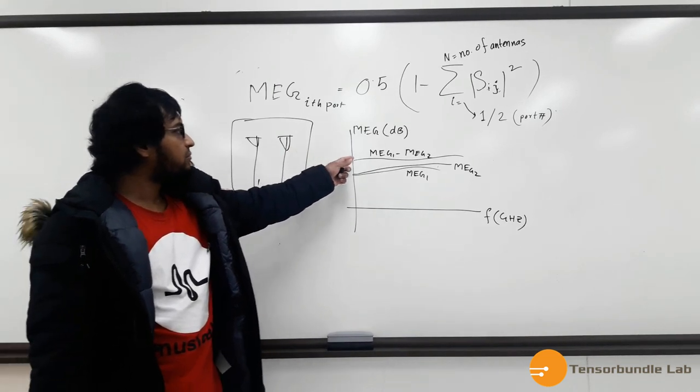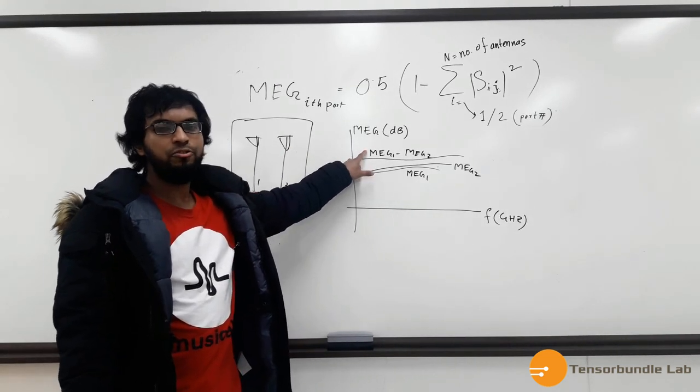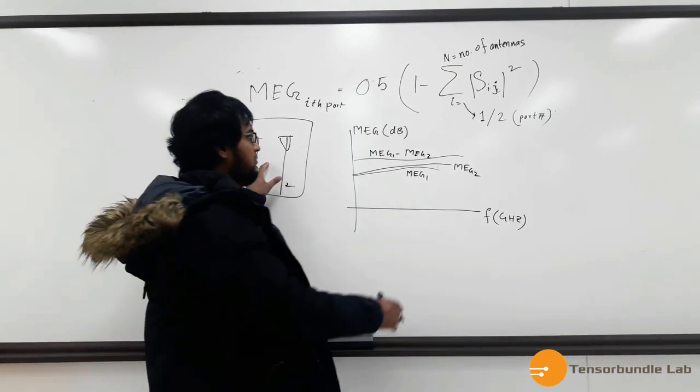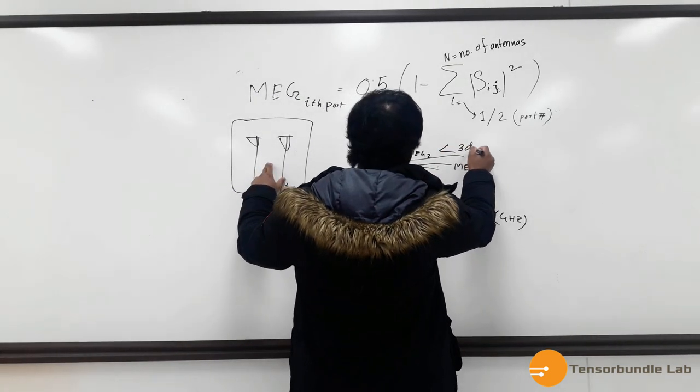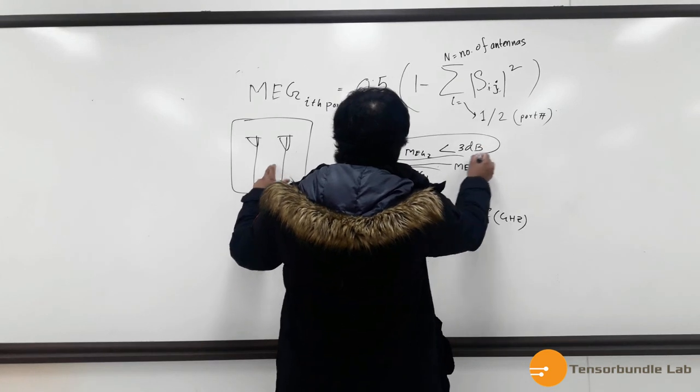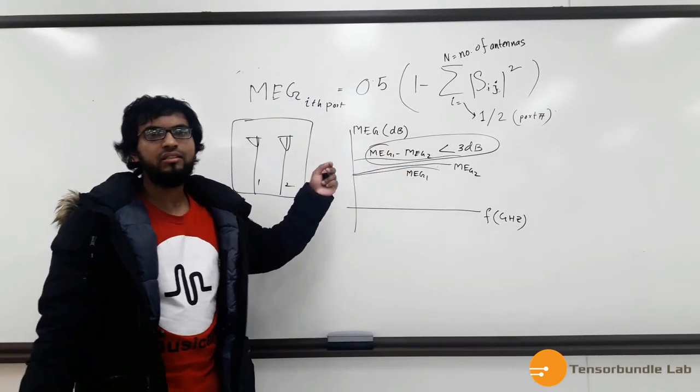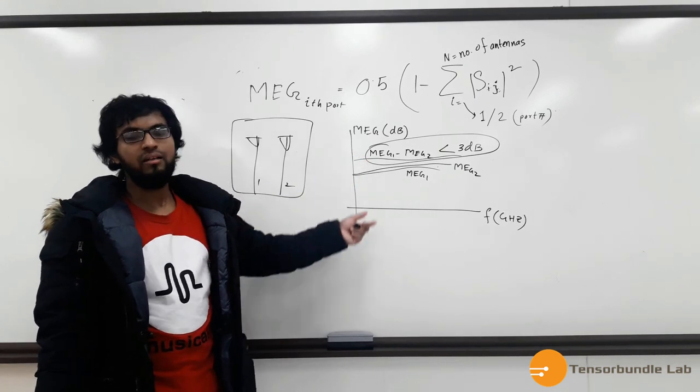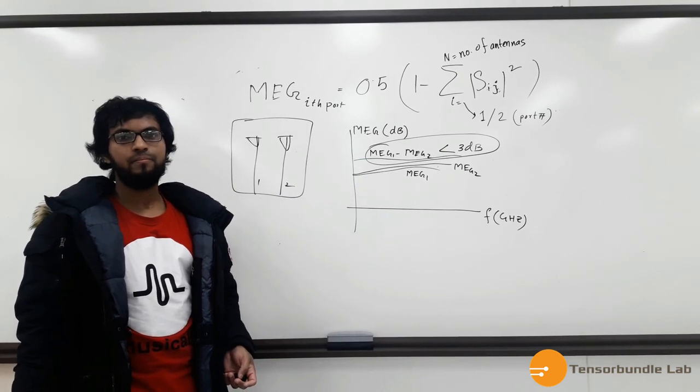And for practical MIMO antenna system, the difference between the MEG of the ports should be always less than 3 dB. So this criterion should be satisfied in order to operate reliably in practice.